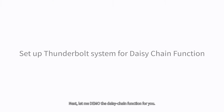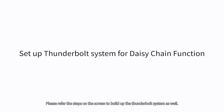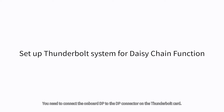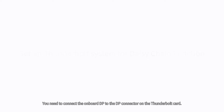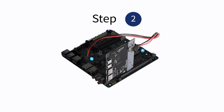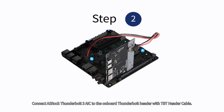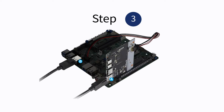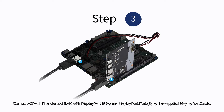Next, let me demo the DAISY Chain function for you. Please refer to the steps on the screen to build up the Thunderbolt system as well. Because we need a great output via the Thunderbolt interface, you need to connect the onboard DP to the DP connector on the Thunderbolt card. Step 1: Install Azraq Thunderbolt 3 AIC card into the PCIe slot on the motherboard. Step 2: Connect the Azraq Thunderbolt 3 AIC card to the onboard Thunderbolt header with TBT header cable. Step 3: Connect the Azraq Thunderbolt 3 AIC card to the display port in and the display port with the supplied display cable.